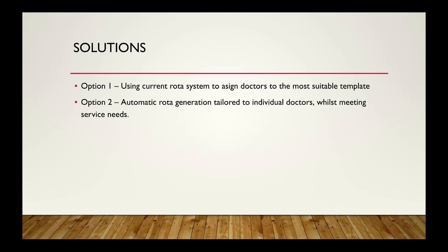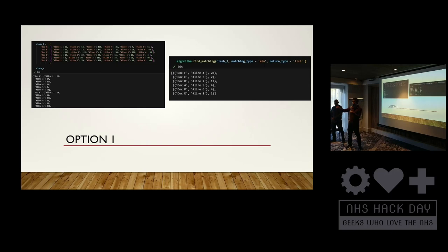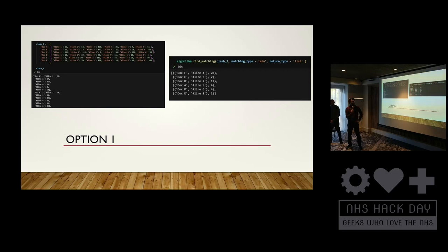Over the last 24 hours we've tried to come up with two solutions. The first algorithm is simpler. Each doctor inputs their preference of leave, and for each rota line it calculates how many times that leave will clash with an on-call shift — shifts on which they cannot take leave. So it calculates the number of clashes in leave with the on-calls, and from there the algorithm identifies the best rota line for each doctor.